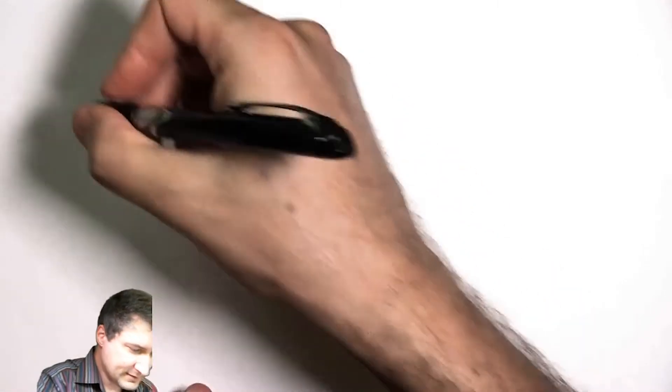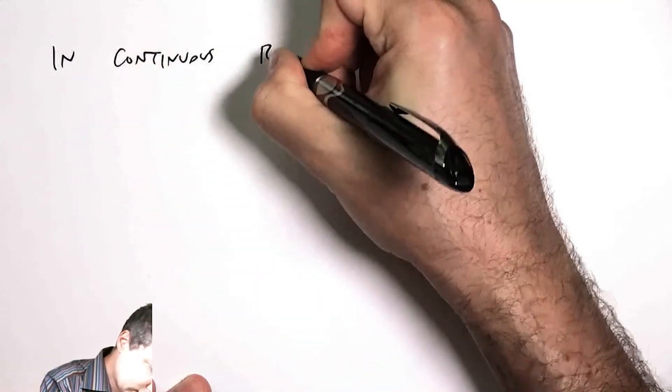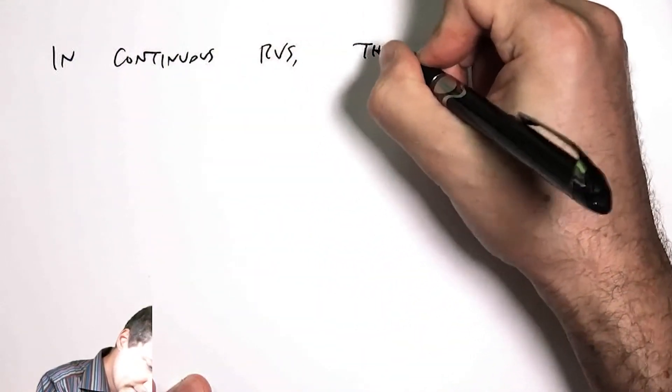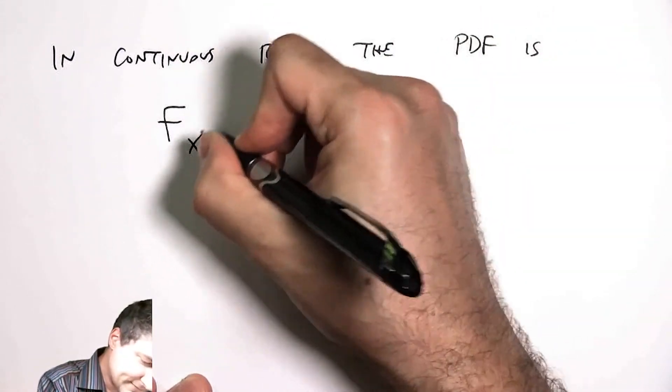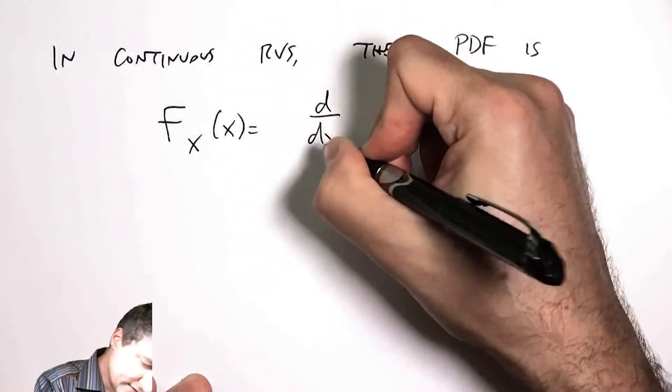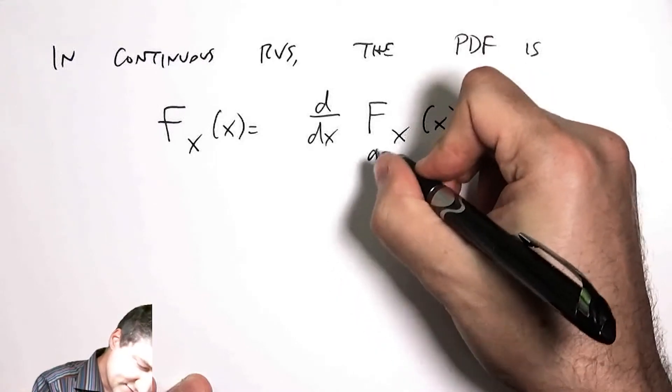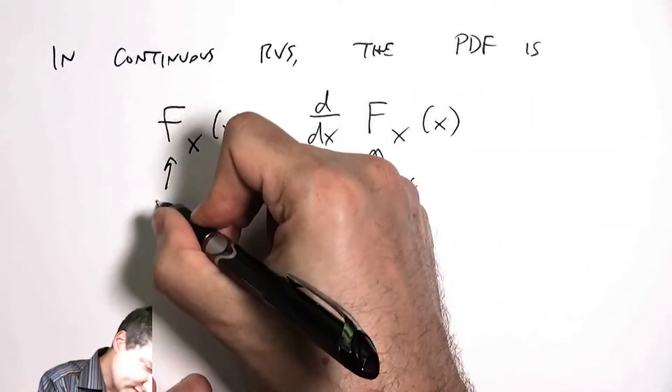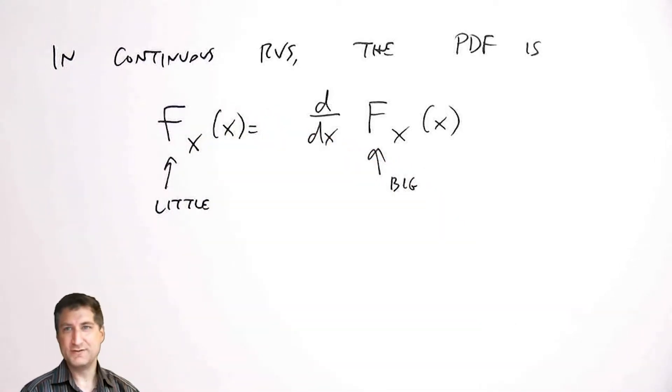Same thing is true for continuous except we're going to give the PDF a slightly different notation. In continuous random variables, the PDF is defined as a little f, which is the derivative of the capital F, which is the CDF. This is a big F and this is a little f. I know it's a little bit confusing and I will try as hard as I can to make sure that it's clear whether this is a little f or a big f.